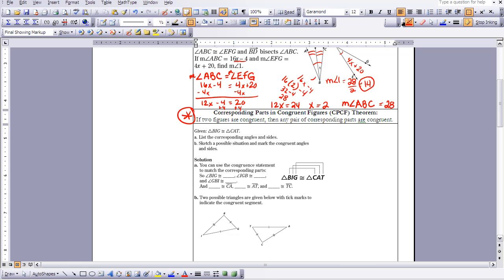So here I have a figure, triangle BIG is congruent to triangle CAT. Now you can be able to identify which angles would be congruent and which segments would be congruent just by using this statement.